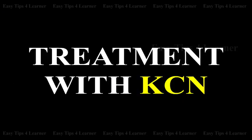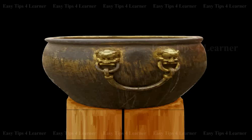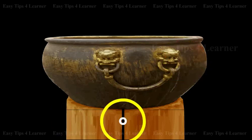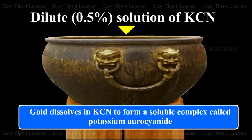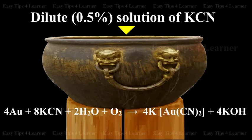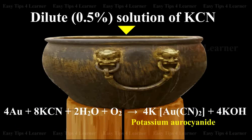Treatment with KCN: the finely powdered roasted ore is taken in large vats made of cement or iron, having false wooden bottoms with holes. It is then treated with a dilute solution of KCN in the presence of excess air for 24 hours. As a result, gold dissolves in KCN to form a soluble complex called potassium aurocyanide. The reaction is: Gold + potassium cyanide + water + oxygen gives potassium aurocyanide + potassium hydroxide.